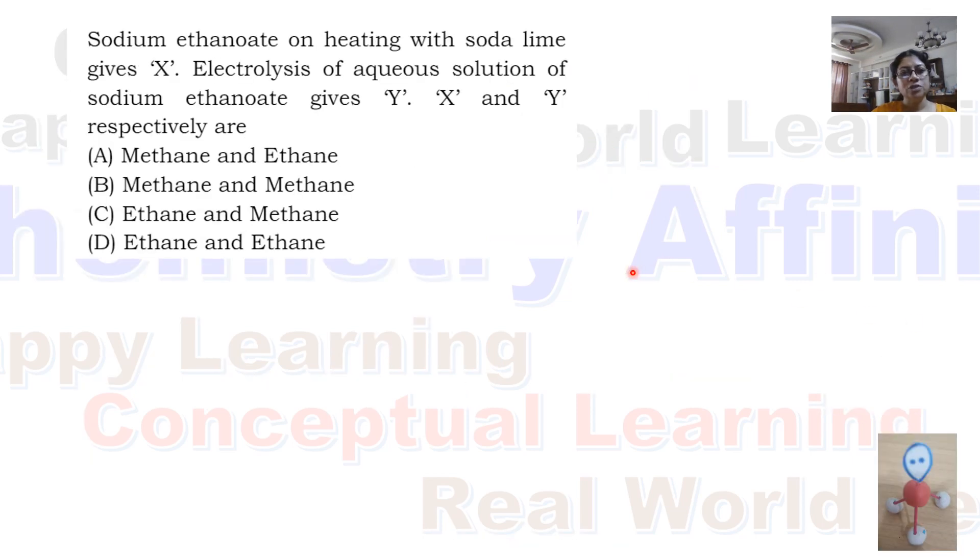Next question. Sodium ethanoate on heating with sodalime gives X. Electrolysis of aqueous solution of sodium ethanoate gives Y. X and Y respectively are, there are four options given. When sodium ethanoate is heated with sodalime, we are getting methane because it undergoes decarboxylation.